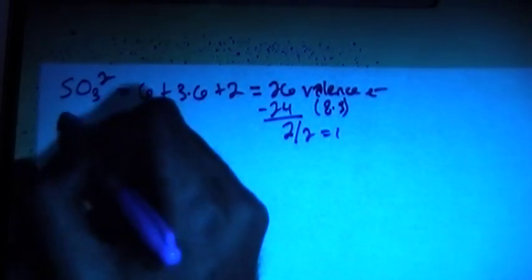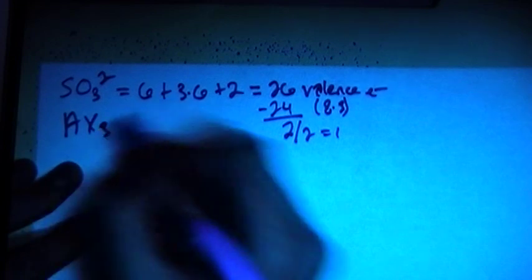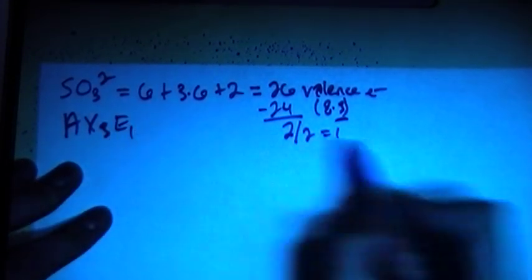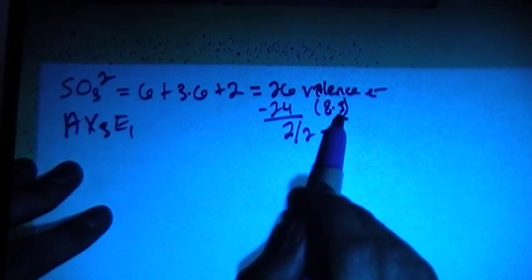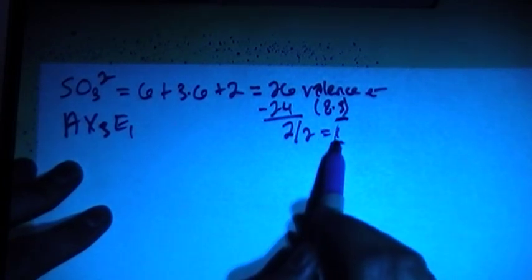So that means that this is going to be an AX3, because of this 3 here, E1, because of this 1 here. So this tells you how many peripheral atoms are going to be attached, and this tells you how many non-bonding electron pairs are going to be on the central atom.